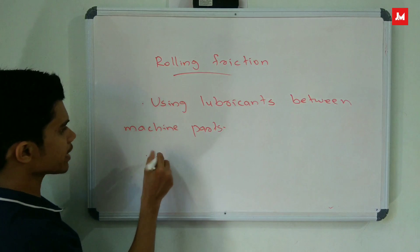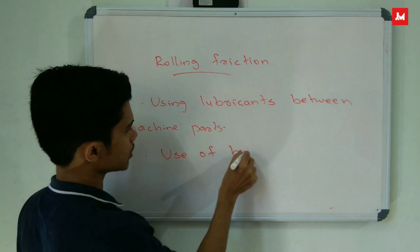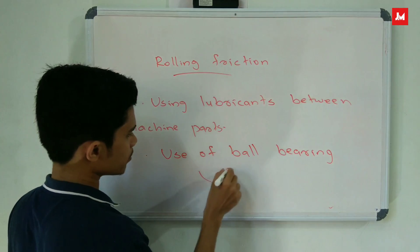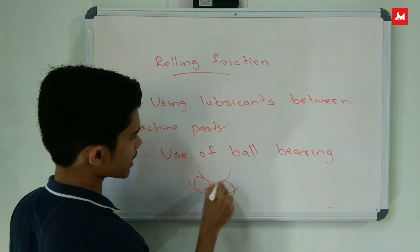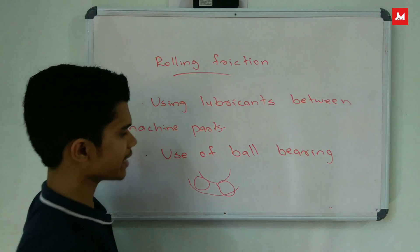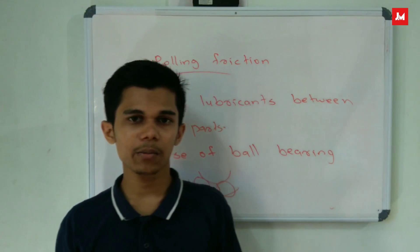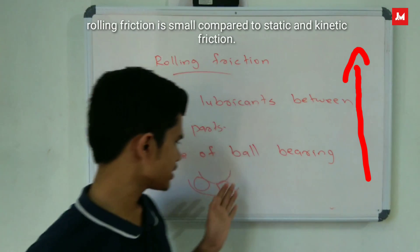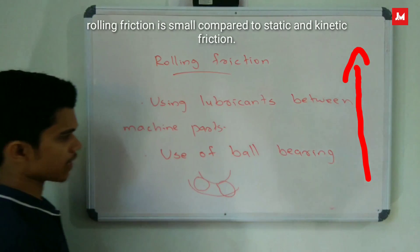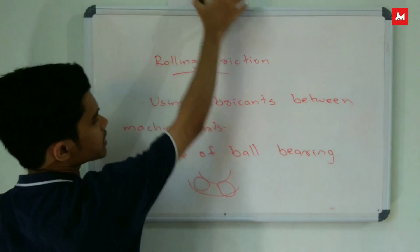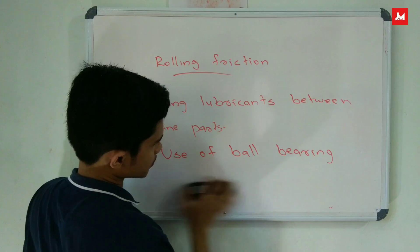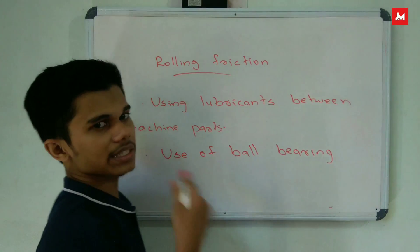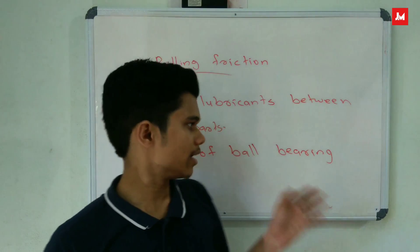Another method is the use of ball bearings. Ball bearings are used between two moving parts in machines to reduce friction.